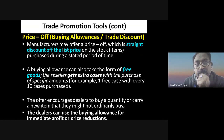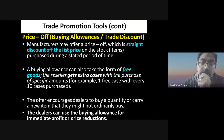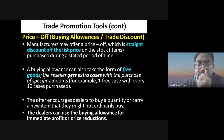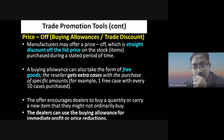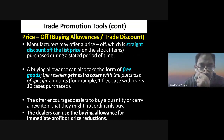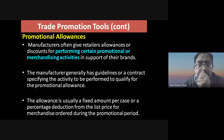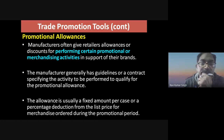Price off, buying allowance, or trade discount involves the manufacturer offering a straight discount on the list price for stocks purchased during a stated period. For example, buy 100 refrigerators during a period and get 10 refrigerators free. Promotional allowances are discounts given to retailers for performing certain promotional or merchandising activities in support of the brand.